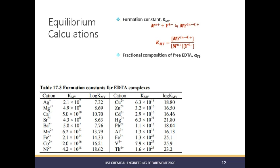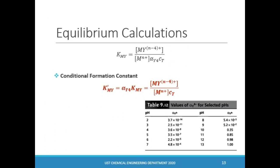Thus, the fractional amount of the Y4- species should be taken into account in the calculation of the equilibrium constant. Alpha is calculated using the previously shown equation. Solving for the concentration of Y4- and substituting into the equilibrium constant expression, then transposing the alpha variable to the other side, we get the conditional formation constant K', which equals alpha times the original formation constant K. This conditional formation constant gives more quantitative information about complex formation at a given pH. Note that this K' value is only valid at the pH where the alpha value used is applicable.